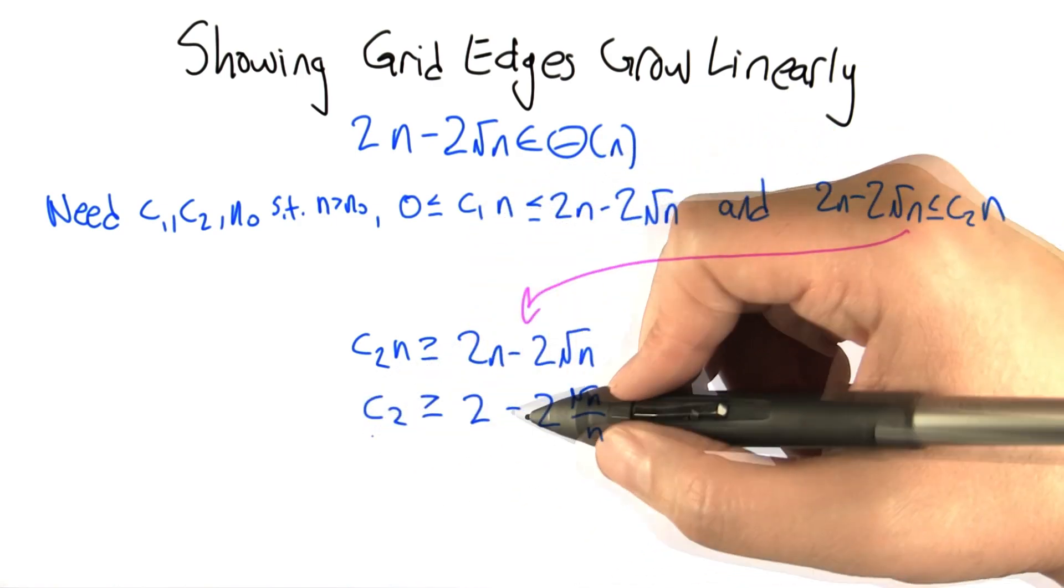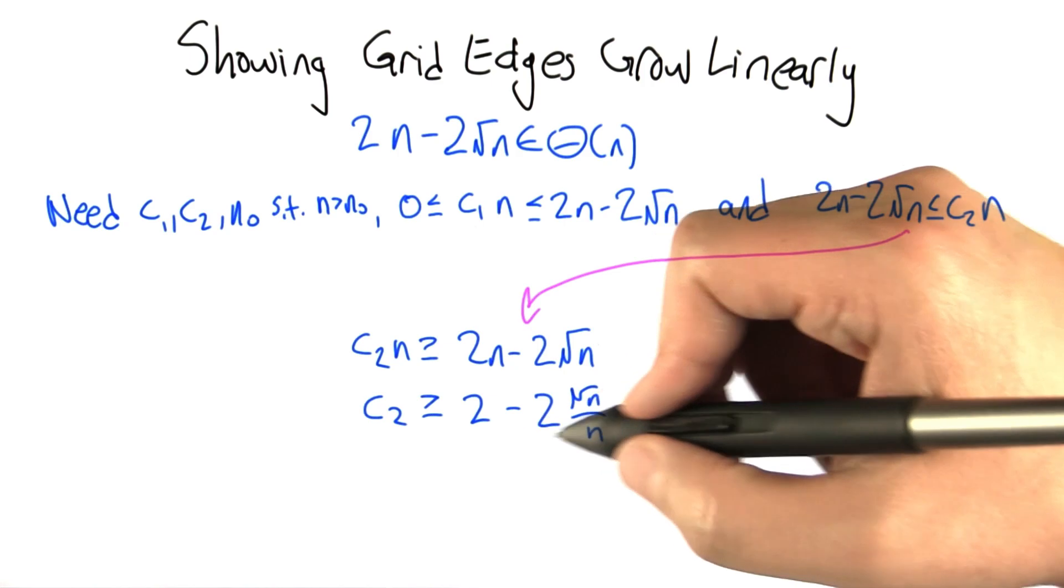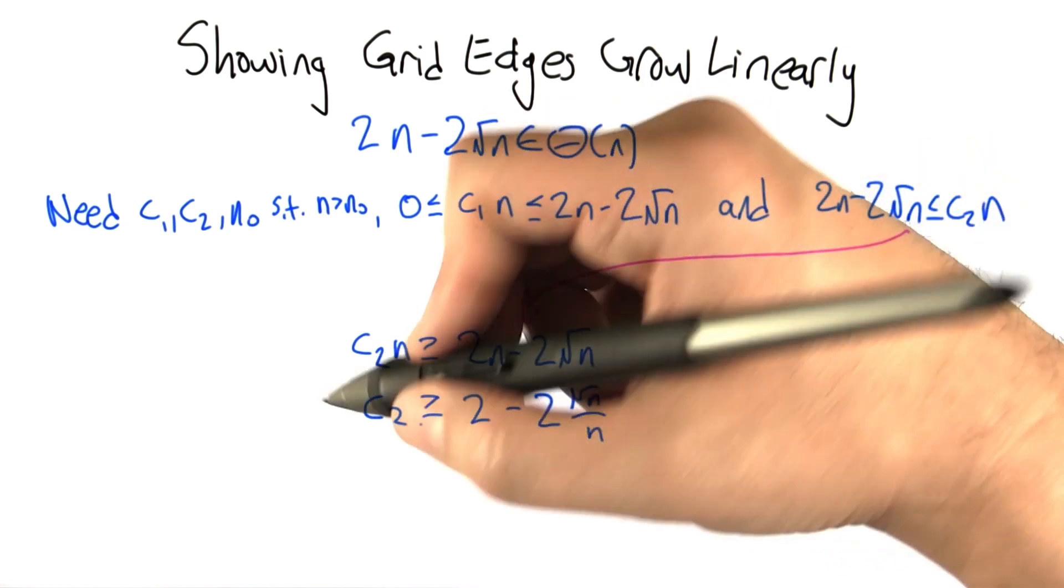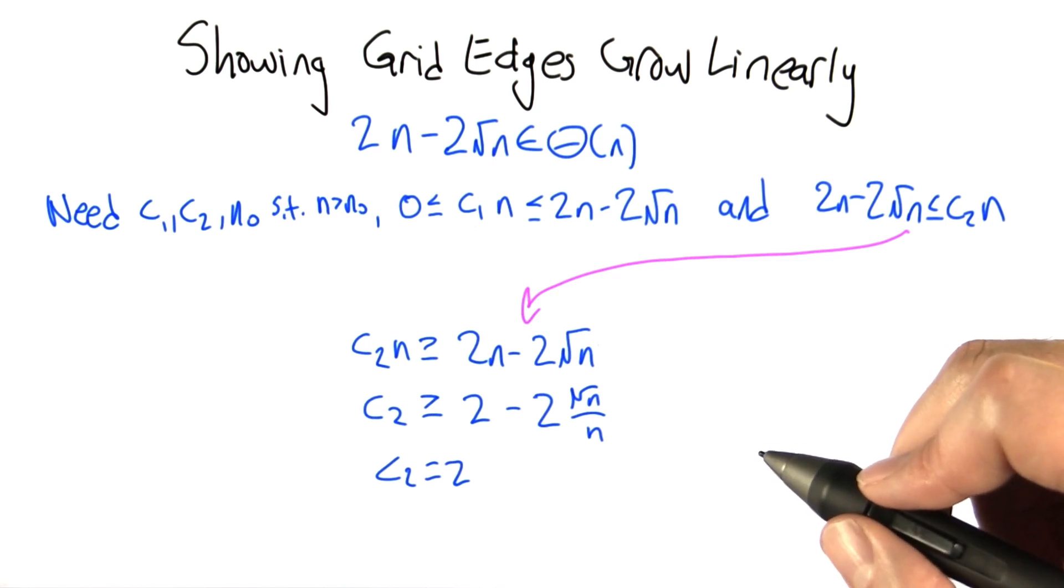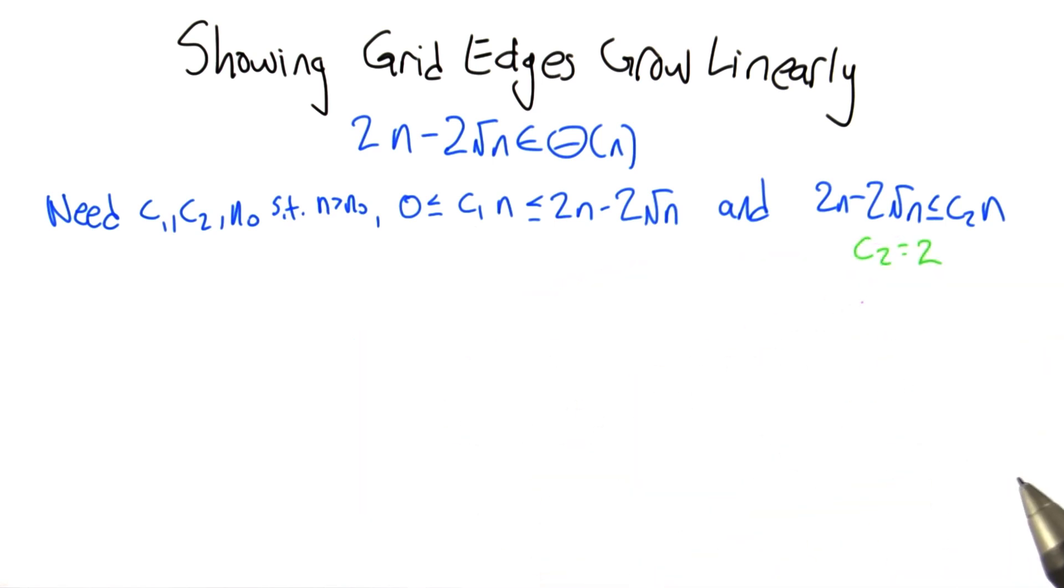So now we need a c2 that is bigger than 2 minus something that's actually growing. 2 should work for that. If we set c2 to 2, it will satisfy this inequality. So let's just summarize all that. We can set c2 equal to 2.